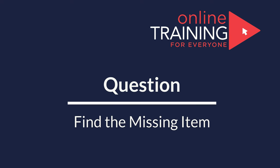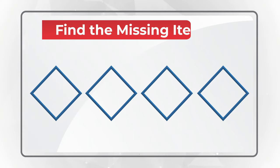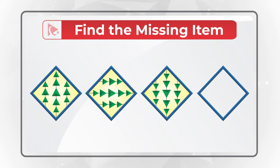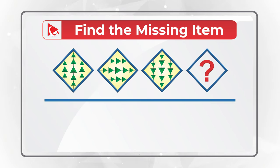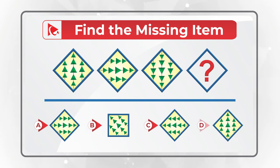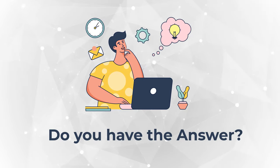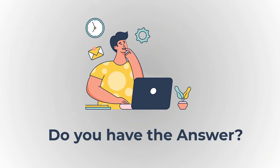Here's an amazing question which tests your analytical skills. You're presented with a set of diamonds — each diamond has other objects inside — and you need to find the missing diamond number four. You have four different choices: A, B, C, and D. Take a close look to see if you can come up with the right solution.